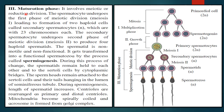It involves meiotic or reduction division. The spermatocyte undergoes the first phase of meiotic division — meiosis I — leading to formation of 2 haploid cells called secondary spermatocytes, each with 23 chromosomes. The secondary spermatocyte undergoes the second phase of meiotic division to form 4 haploid spermatids. The spermatid is non-motile and non-functional. It gets transformed into functional spermatozoa by the process called spermiogenesis — a very important term. During this process, spermatids remain held to each other and to Sertoli cells (the nurse cell) by cytoplasmic bridges.